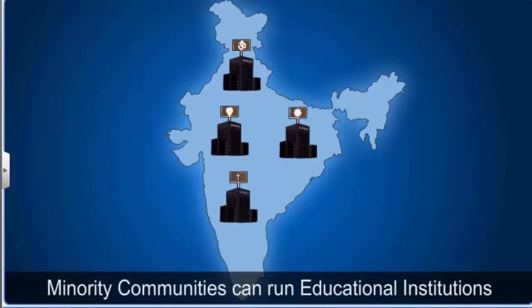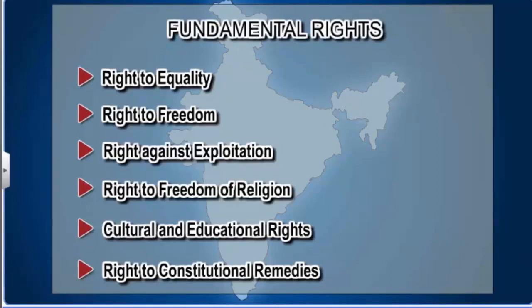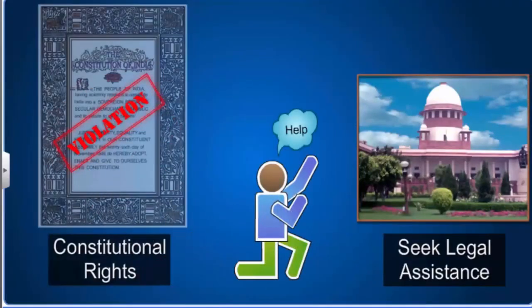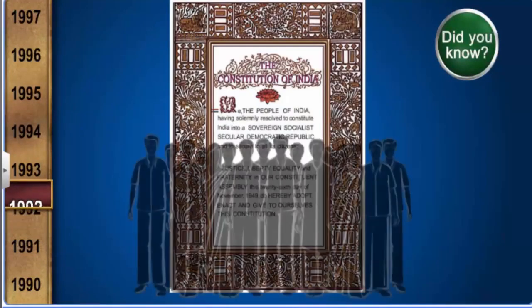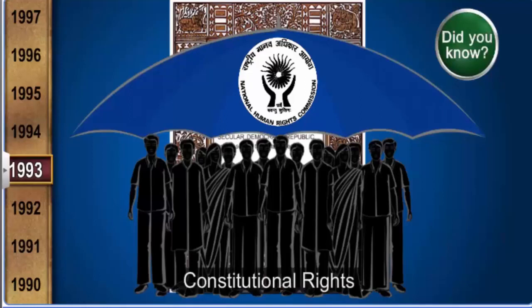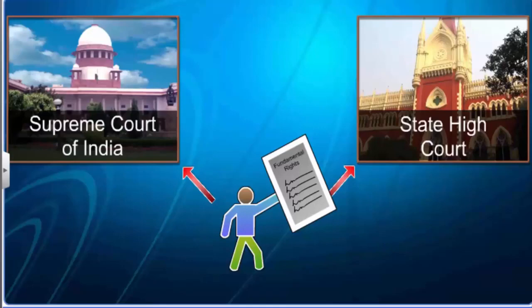The right to enforce all these fundamental rights mentioned in the Indian constitution is called the right to constitutional remedies. It allows you to seek legal assistance from courts if any of your constitutional rights are violated. In 1993, the National Human Rights Commission or NHRC was set up by law to secure all the rights granted by the constitution to the citizens. Any citizen can write to the NHRC to complain against the violation of a constitutional right. You can approach the Supreme Court or the High Court of your state. Even the President of India cannot stop you from approaching the Supreme Court to secure your fundamental rights. Dr. Babasaheb Ambedkar called this right the heart and soul of our constitution.